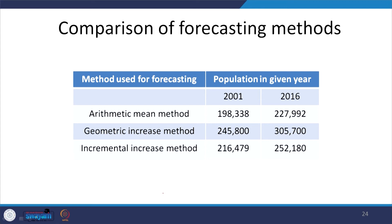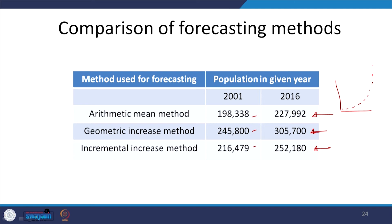Comparing the three methods for 2016: arithmetic mean gives a relatively lower value; incremental increase gives a higher value; and geometric mean, assuming exponential growth, gives the highest. As the time period increases, the geometric mean races ahead due to exponential growth. For shorter periods, the disparity between the values is relatively small.